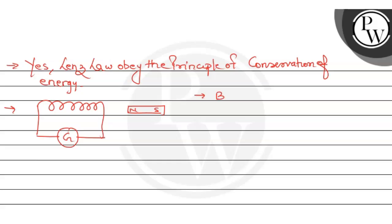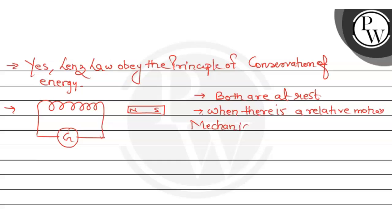When both the coil and magnet are at rest, no current flows. When there is relative motion, you provide mechanical energy to the magnet. Due to that relative motion, the flux changes and an induced current is produced, resulting in electrical energy. So mechanical energy is converted to electrical energy — this is how the law of conservation of energy is valid, and Lenz's Law obeys it.